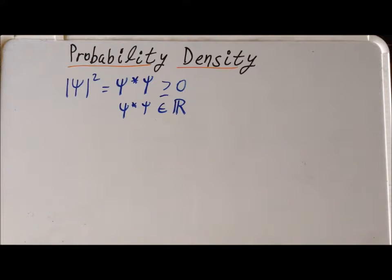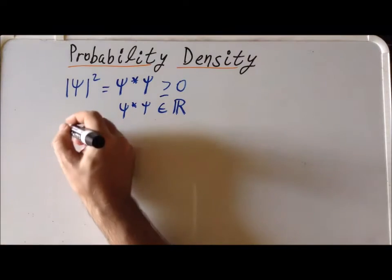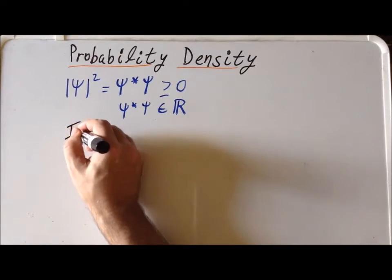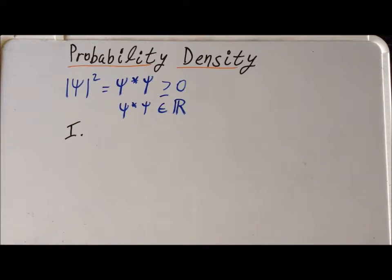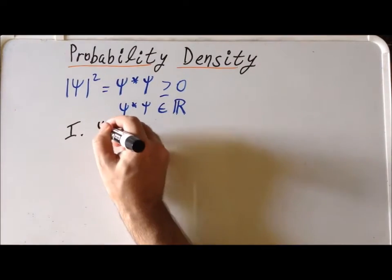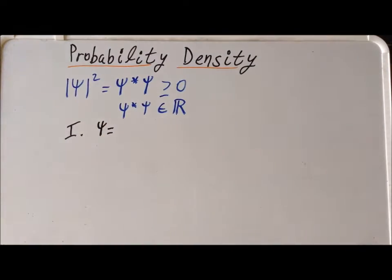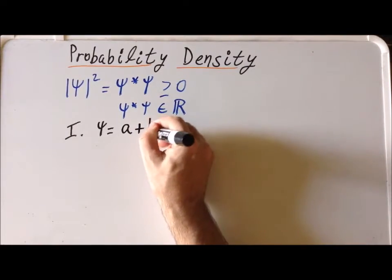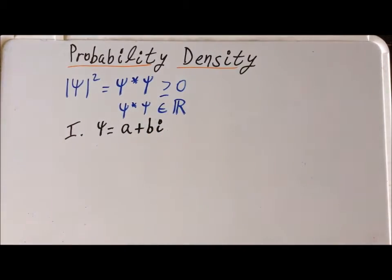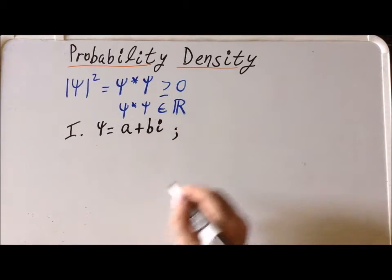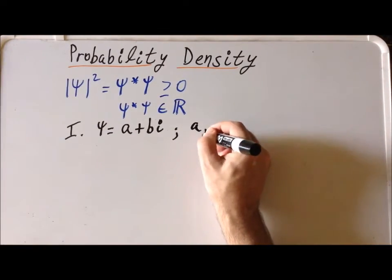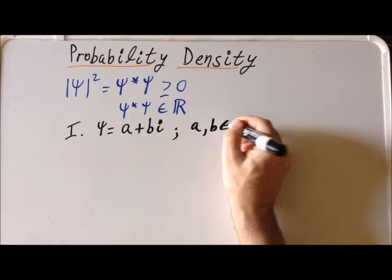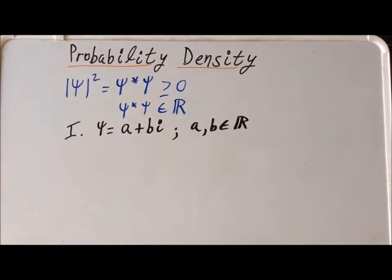In this video, we're going to show two proofs that are related to each other. For the first proof, we're going to proceed in the following manner. We're going to assume that we can write the wave function in the following form — we can assume that it might be complex, so we can write it as a plus bi, where a and b are real numbers. That's an important part of the proof, that a and b are both real.